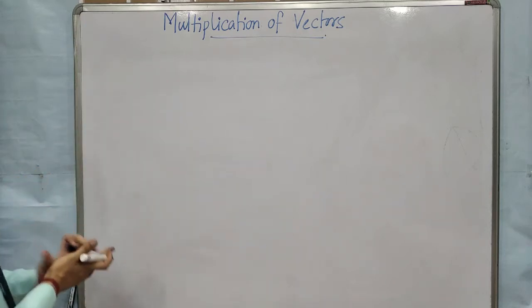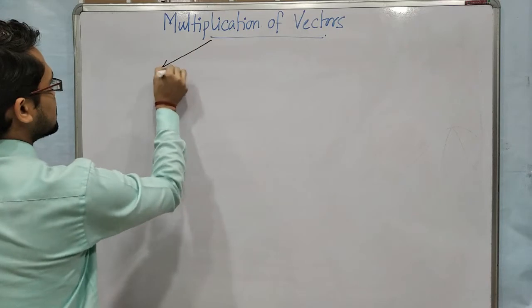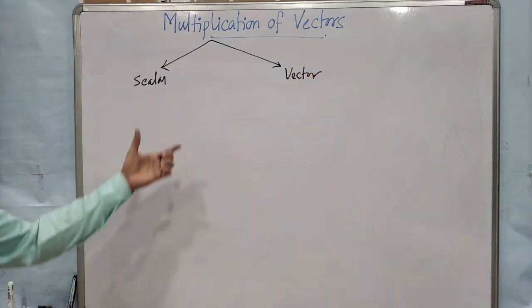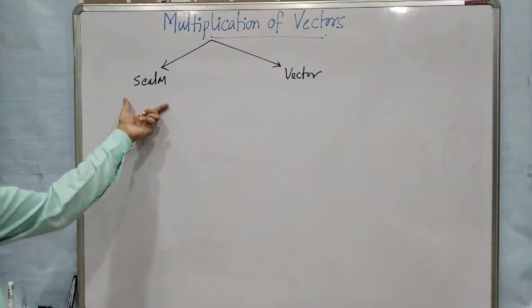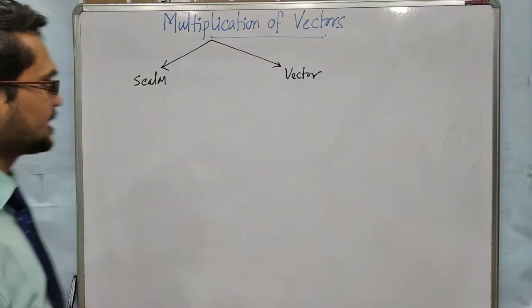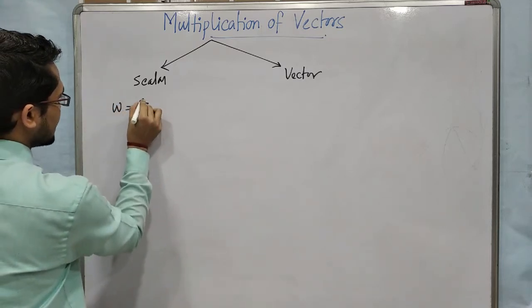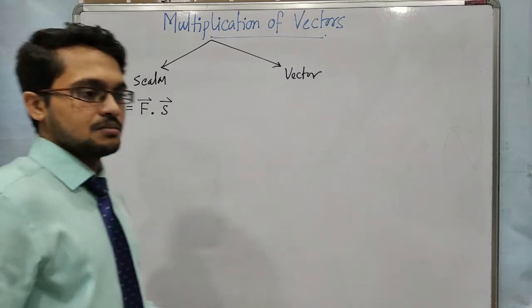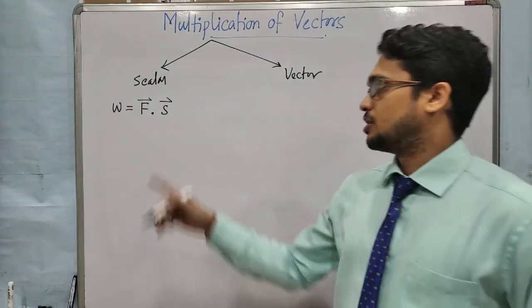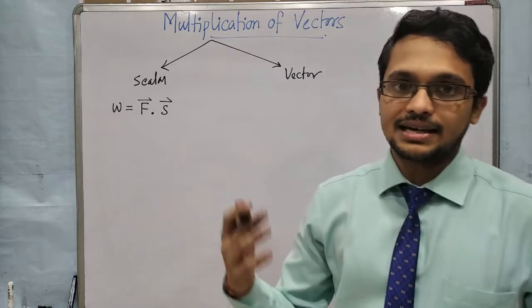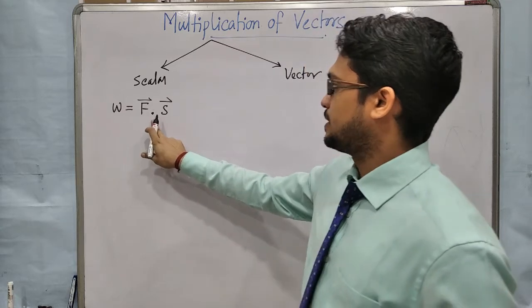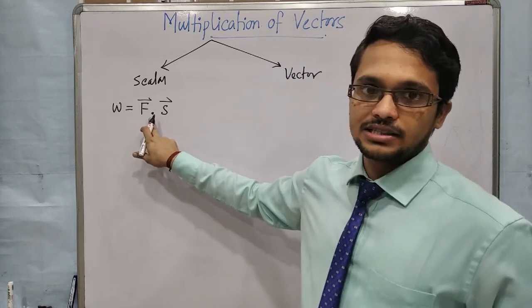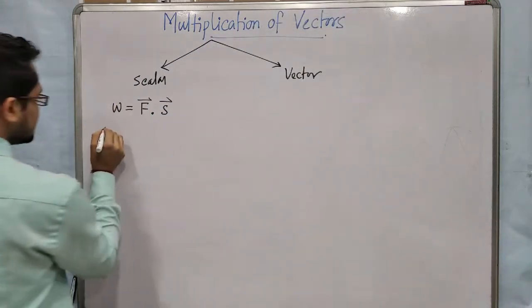Now come to multiplication. In vectors, there are two types of multiplication: one is scalar multiplication and another is vector multiplication. Scalar multiplication means after multiplying two vectors we get a scalar. Like example, work W = F·s. In class 10 you have read that work means force times displacement in the direction of force. That means W = F dot s. Scalar product is written with a dot sign between two vectors.